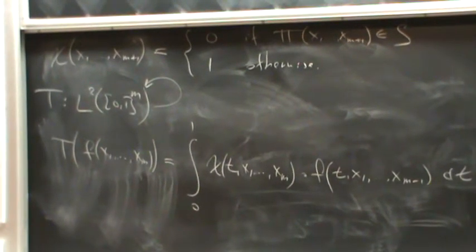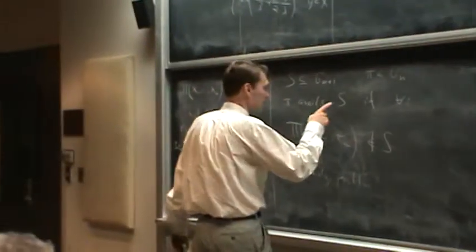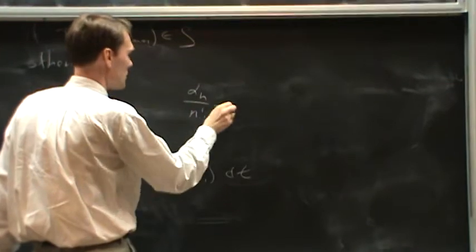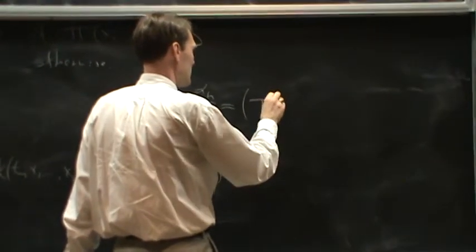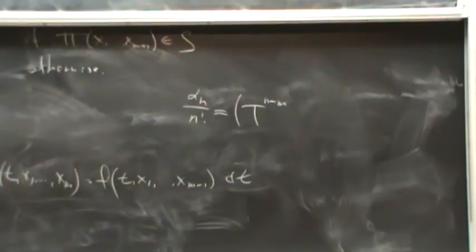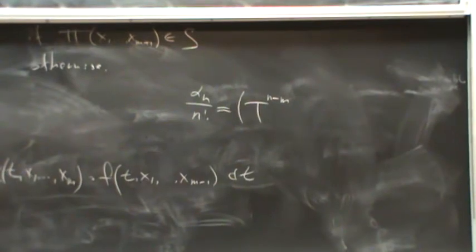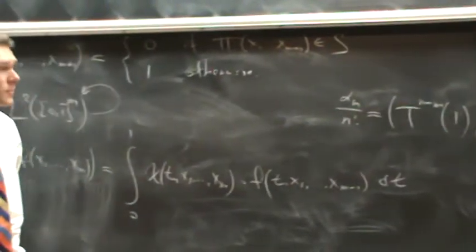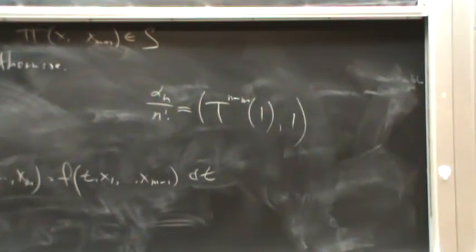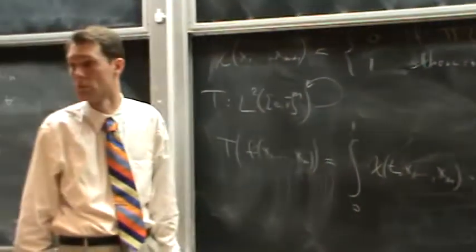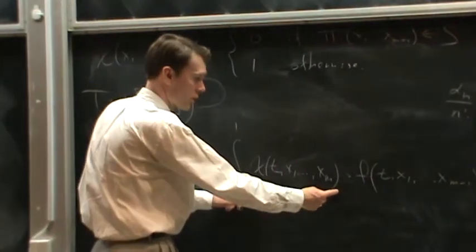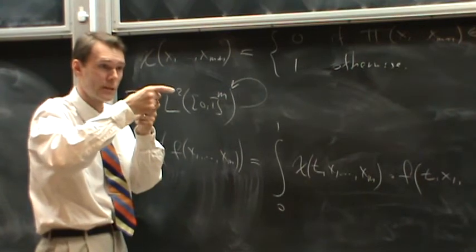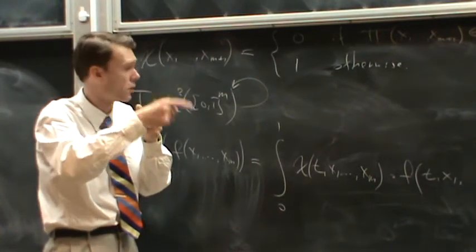And the same reasoning as before, the number of s-avoiding permutations now satisfies that alpha m over n factorial is given by the inner product T to the m minus m, before in my first case we did m was equal to 2, applied to constant function 1, in the product with constant function 1. It's the same reasoning as before, it's realized that this function glides through the thing and checks if each m plus 1 tuple, to make sure that a forbidden pattern does not occur. And if it does occur, it sets it to 0.